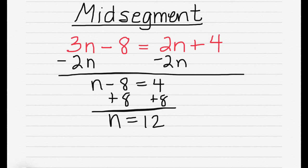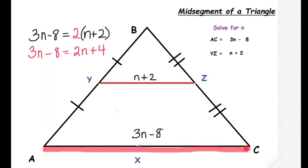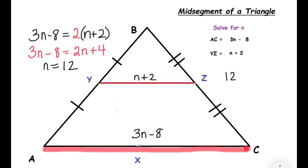Now, let's go back to the triangle and plug this in. We calculated that N equals 12. If we substitute N in for our YZ, that means 12 plus 2 equals 14. And if we substitute here, we have 3 times 12 minus 8. This is 36 minus 8, which equals 28. And 14 is half of 28.